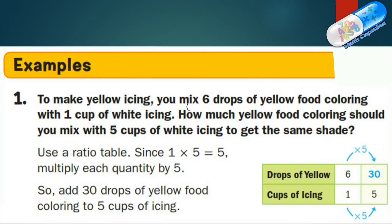Example: To make yellow icing, you mix six drops of yellow food coloring with one cup of white icing. We have six drops of yellow food coloring and one cup of white icing. We make a table with the two quantities we are comparing — drops of yellow coloring and cups of icing — and put in this ratio: six drops to one cup.